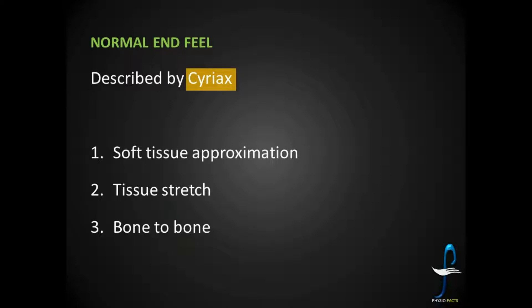These are described by Cyriax. He said there are three types of end feels in our body: soft tissue approximation, tissue stretch, and bone to bone. Let us read each end feel in detail.